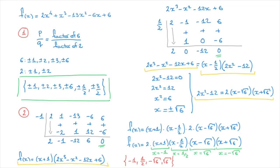We have found all the zeros for this polynomial function. Notice that only two zeros were in our list of rational numbers from step 1. Both -√6 and √6 are irrational, highlighting an important fact: the rational root theorem only helps find rational zeros. For irrational zeros, we rely on other methods, like solving quadratic equations, or graphical methods using calculators. We now know how to use the rational root theorem to find zeros of a polynomial function.